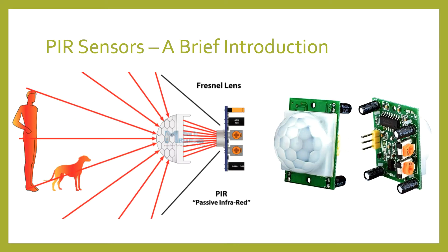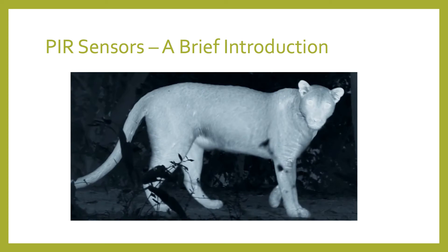PIR stands for Passive Infrared. A PIR sensor measures the infrared light radiating from an object in its field of view. Everything with a temperature above absolute zero radiates electromagnetic energy dependent on its body temperature — this is called an object's heat signature or black body radiation. PIR sensors detect when there's a temperature change between the ambient temperature and the heat signature of whatever objects are within the sensor's range or field of view. So for example, when an animal walks into the PIR's range of view, it picks up the difference between the ambient temperature and the heat signature of the object.